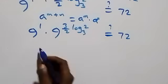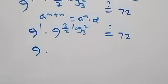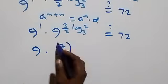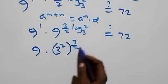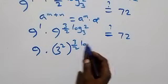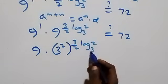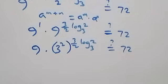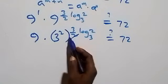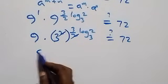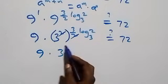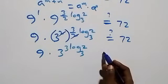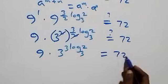9 raised to power 1 is just 9. We then express 9 as 3 squared, so we have 9 times (3 squared) raised to power (3/2·log₃2). The powers multiply and the 2 cancels with the 2 in the denominator, giving 9 times 3 raised to power 3·log₃2 equals 72.